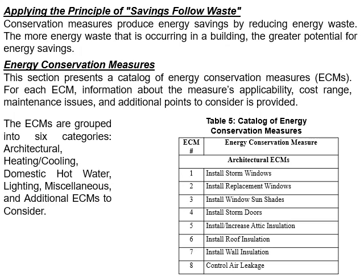The energy conservation measure, as I mentioned, we have six categories. Let me give an example about this. Category one is the architectural energy conservation measures. We're talking about inputs to the architectural design in buildings or houses, which reflects on energy consumption.